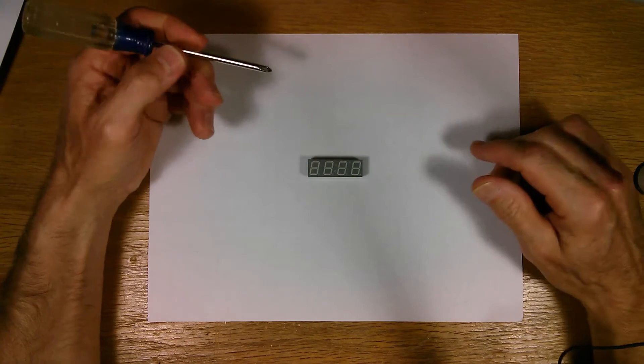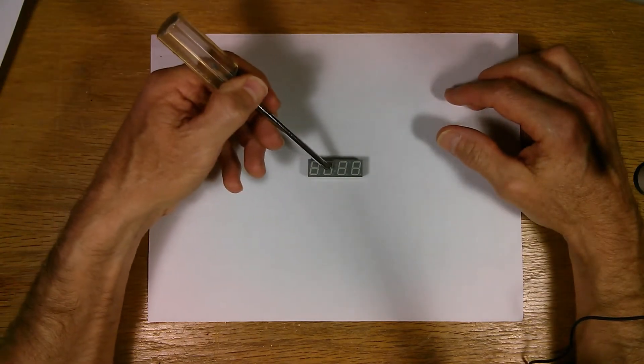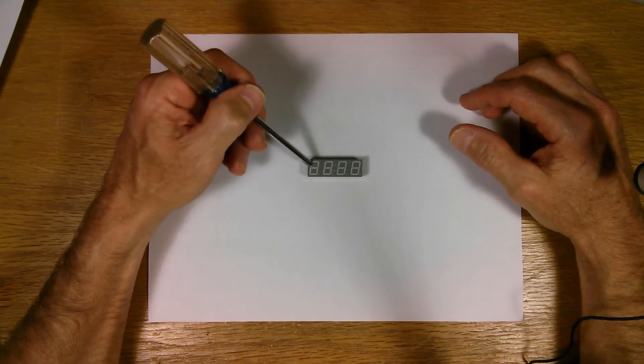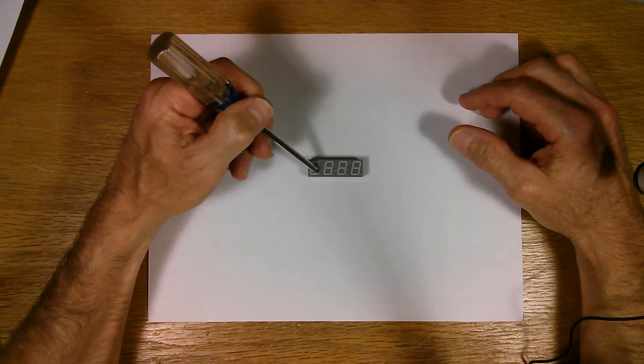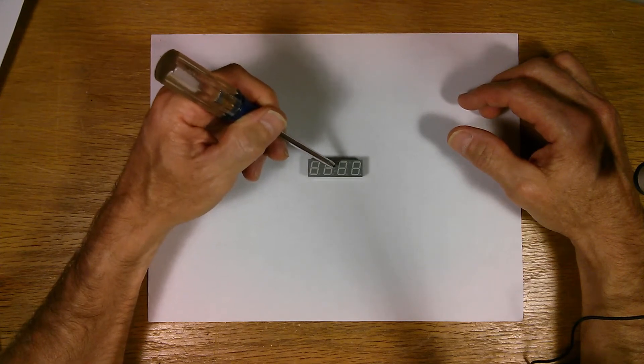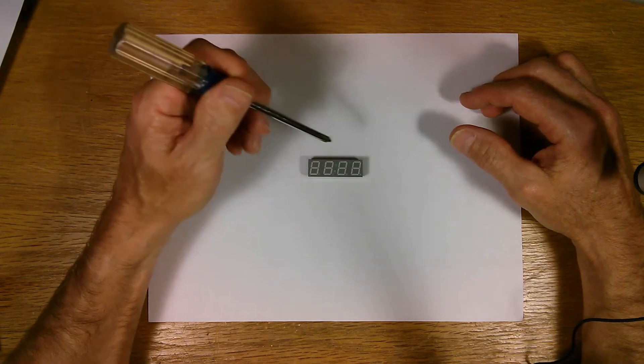This is a four digit LED display. You can see the four digits, they all look like eights right now, but each one of these segments has seven segments all the way around here plus a decimal point plus two more here to make a colon and this could be used for a clock as well.